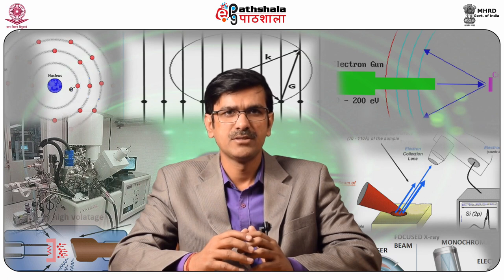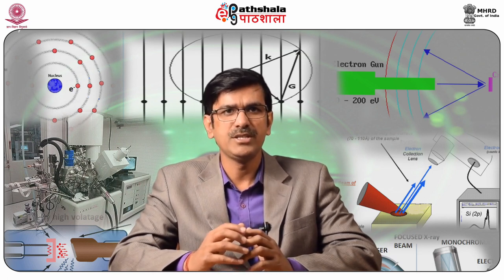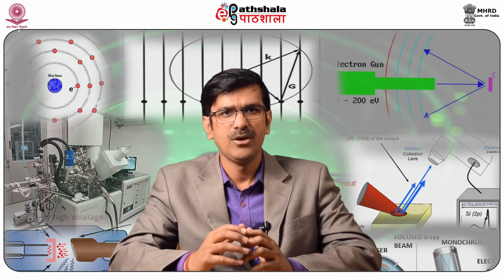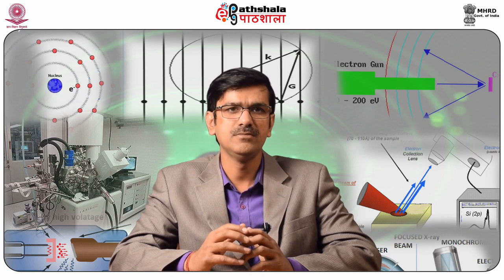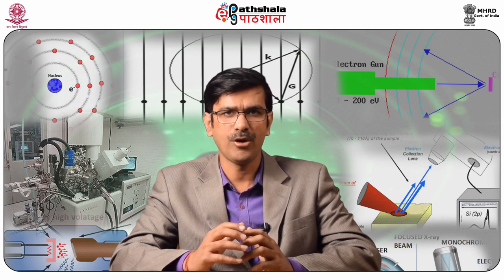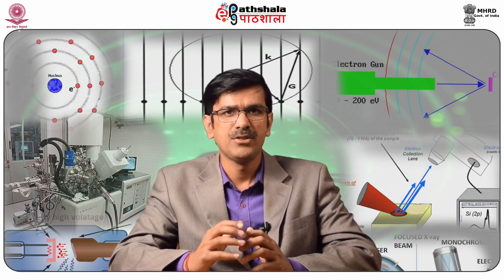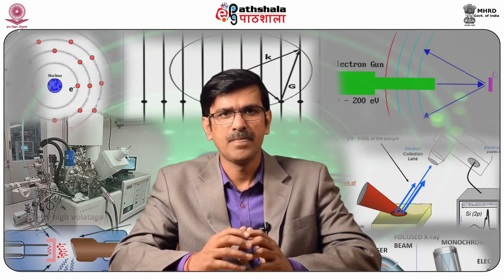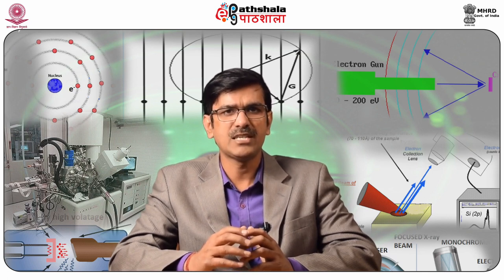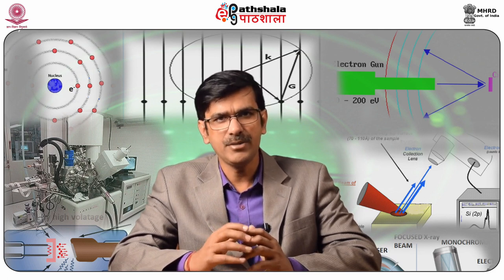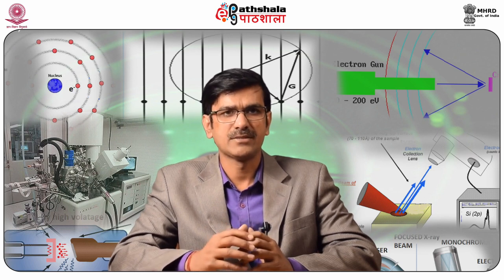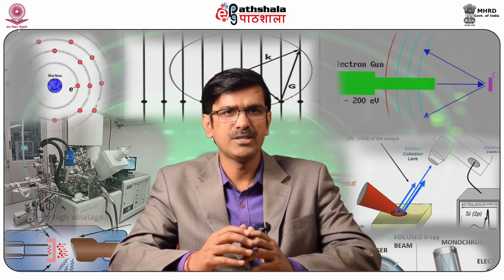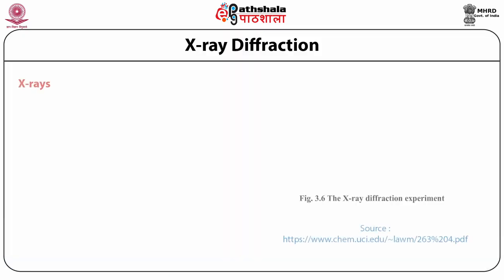Miller indices specify the direction and spacing in the lattice and crystal. A group of three numbers indicates the orientation of a plane or set of parallel planes of atoms in a crystal. The intersecting edges of one of the unit cells define a set of crystallographic axes, and the Miller indices are determined by the intersection of the plane with these axes. The reciprocal of these intercepts are computed and fractions are cleared to give the three Miller indices H, K, and L.